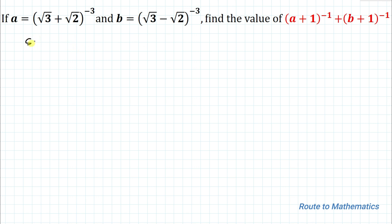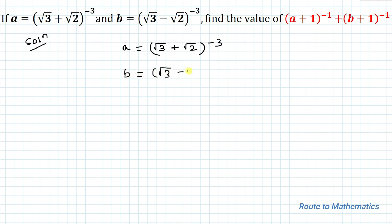So without any delay, let's start the solution. We have been given a = (√3 + √2)^(−3) and b = (√3 − √2)^(−3).